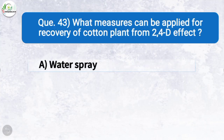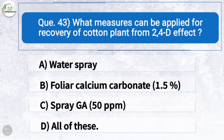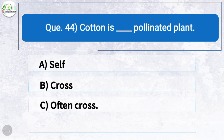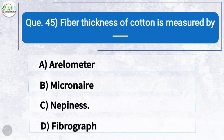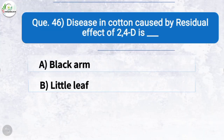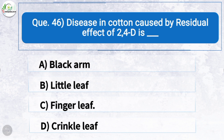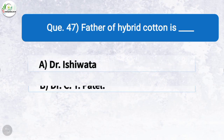Question forty-three: What measures can be applied for recovery of cotton plant from 2,4-D effect? The correct answer is option D: all of these — water spray, foliar calcium carbonate (1.5%), and spray of GA at 50 ppm. Question forty-four: Cotton is a — the correct answer is option C: often cross-pollinated plant. Question forty-five: Fiber thickness of cotton is measured by — the correct answer is option C: neppiness meter.